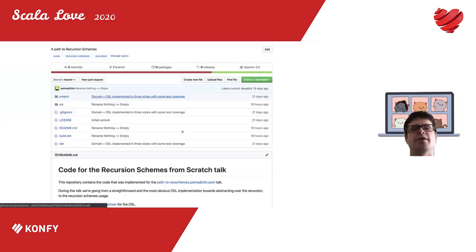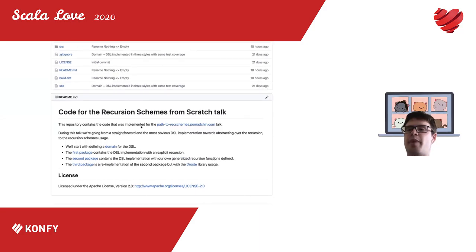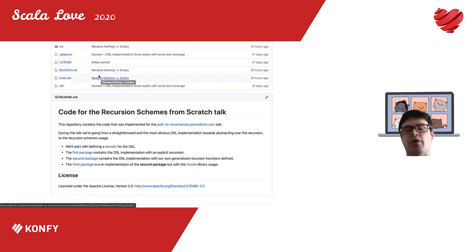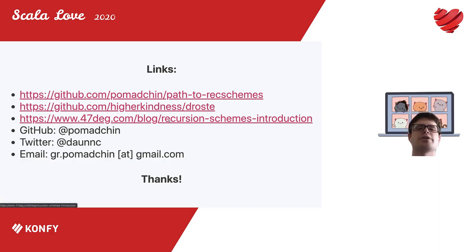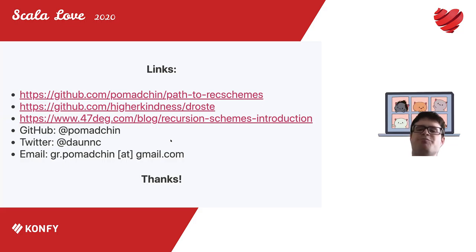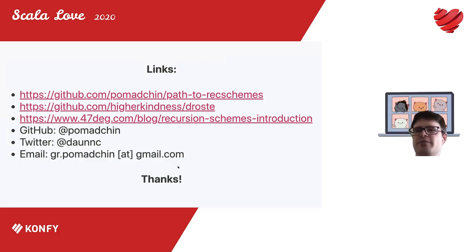I created a project supporting this presentation with everything implemented here — three packages: the first contains the DSL without recursion schemes, the second contains the DSL with our own catamorphism and anamorphism defined, and the third reimplements everything using Droste. Use Droste — it's a library supporting Cats that implements all these beautiful recursion schemes and brings more purity to your code. I was also inspired by Ollie's recursion schemes introduction blog post, which shows you can use recursion schemes beyond just calculators. Follow me on GitHub, Twitter, or email — thanks for listening!